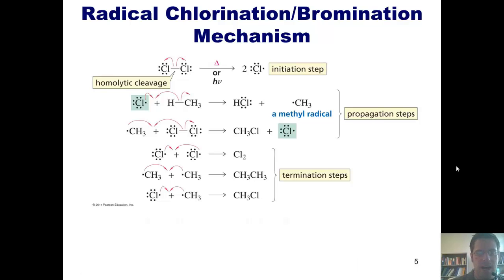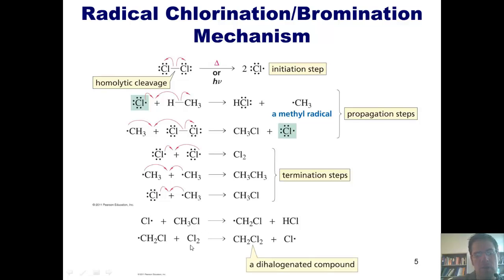Something else, interestingly, that can happen is I can have my chlorine radical get together with my methyl chlorine product and abstract one of its hydrogens to form HCl and a methyl chloride radical. That radical can then go on to combine with another molecule of chlorine to now form methyl dichloride. It has two halogens on it. We'll pay some closer attention to this later on.